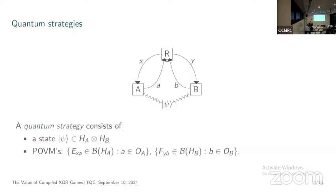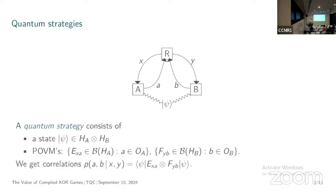One way to model such strategies, in the case where the two players share some entangled state, is that we have some state in some tensor product Hilbert space. Alice and Bob are allowed to do local measurements on their local Hilbert space — those are just positive operator-valued measures, positive operators that sum up to identity. The probability of Alice and Bob receiving X and Y and answering with A and B is given by the state with the measurement operators in the tensor product.